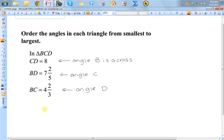So this would be the smallest, so angle d is the one across from that. And then this one is the next one, so angle c would be the next one. And then angle b would be the largest.